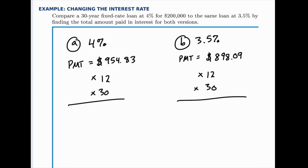In the first case, if you take $954.83 times 12 times 30, you should get $343,738.80. In the second case, if you take $898.09 times 12 times 30, you should get a total of $323,312.40.